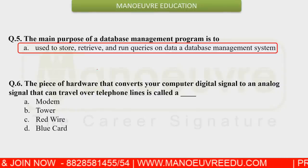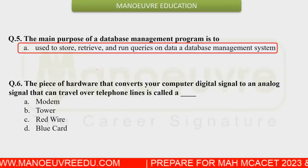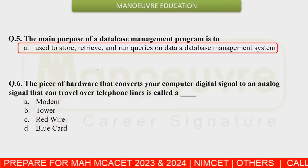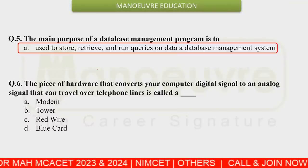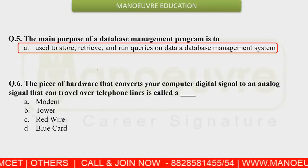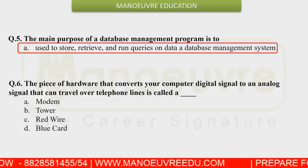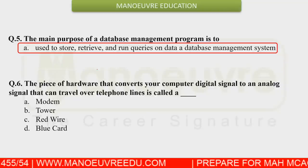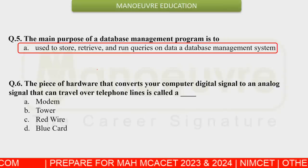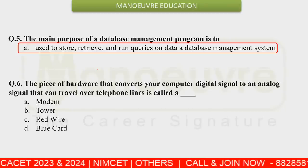In slot 2, there were questions related to hardware — input and output devices. One question asked: a piece of hardware that converts your computer's digital signal to analog so it can travel over a telephone line is called what? The answer is a modem — modem stands for modulation and demodulation, a device that handles both digital-to-analog and analog-to-digital conversion.